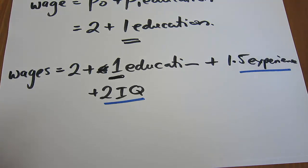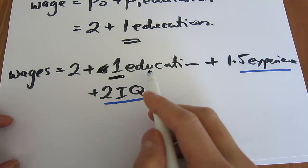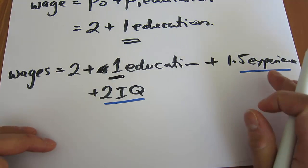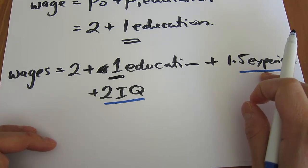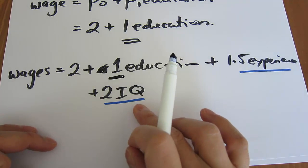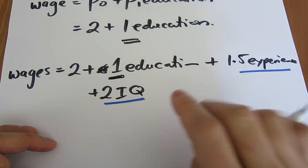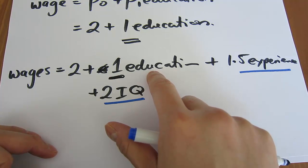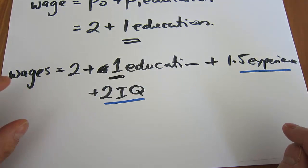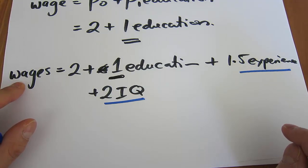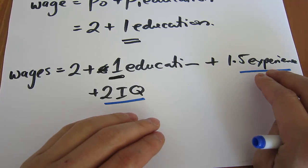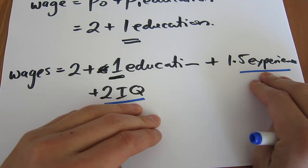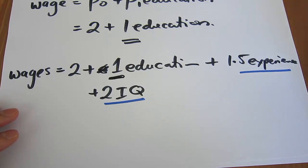We call that the marginal effect or marginal impact of education on wages. What we mean is that if we had two people with identical experience and identical IQ, and one of them has one extra year of education, they're expected to earn an extra $1 per hour after controlling for the same level of experience and IQ. We call that the marginal impact or the marginal effect.